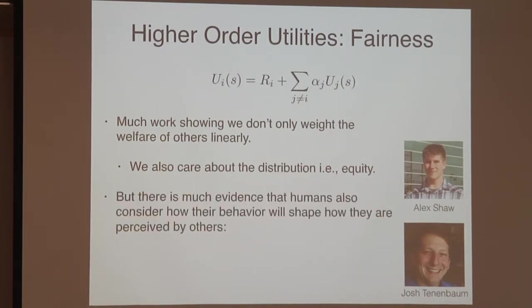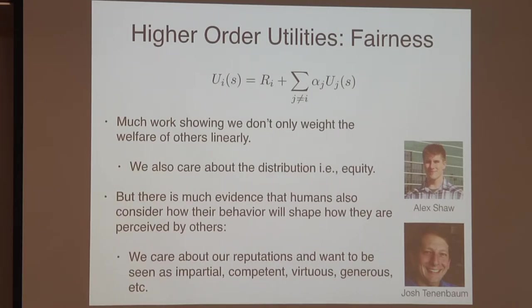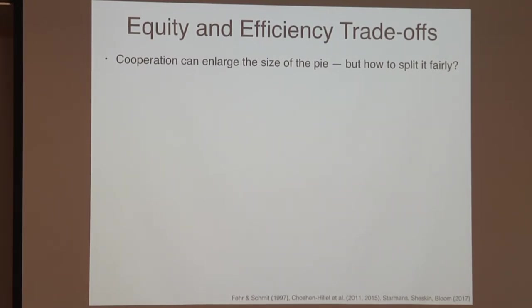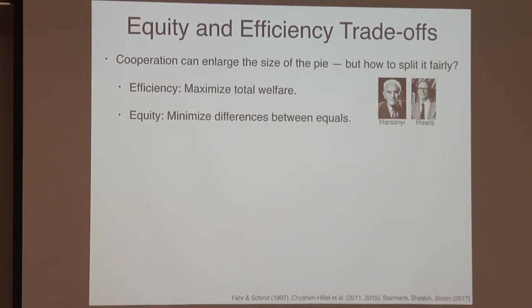In addition to equity, there's lots of evidence that we care about what our behavior says about us — how those allocations reveal our underlying values. This is a kind of reputation: we want to be seen as impartial, competent, virtuous, and generous. This is often called the equity-efficiency tradeoff, which permeates economics and philosophy. The general idea is that cooperation can enlarge the size of the pie, but how do we split it fairly? There's the efficiency approach — just maximize total welfare — and minimize the difference between equals. There are two types of equity: efficient equity and inefficient equity.